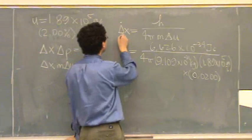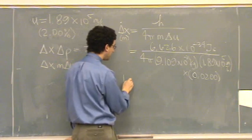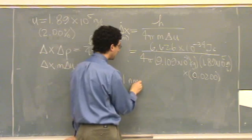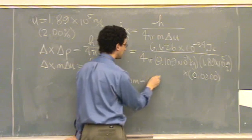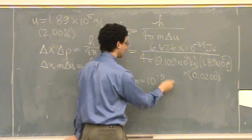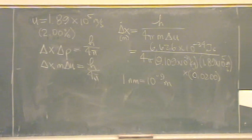In meters. So, this will be in meters. So, you'll need to know that 1 nanometer equals 10 to the minus 9 meters.